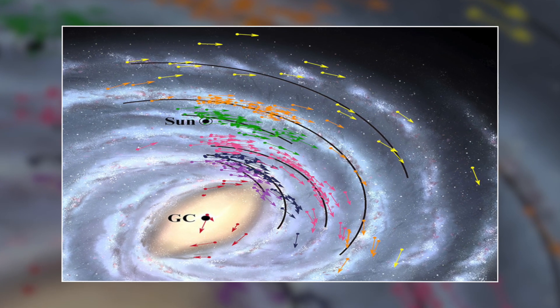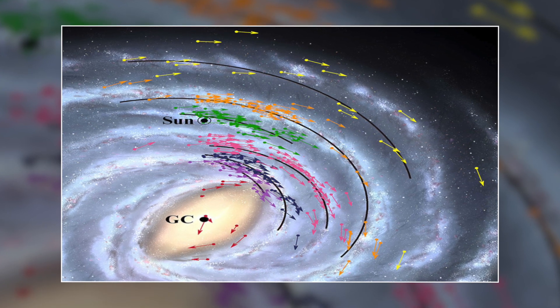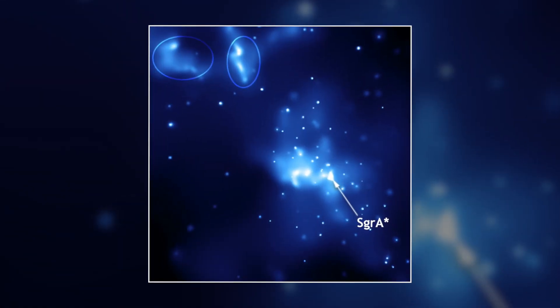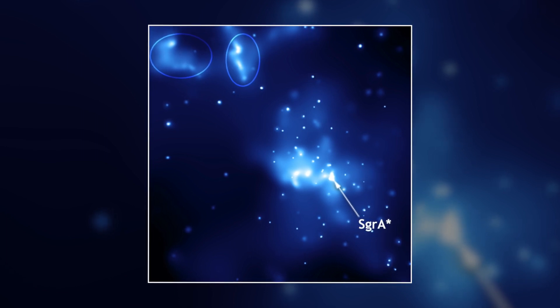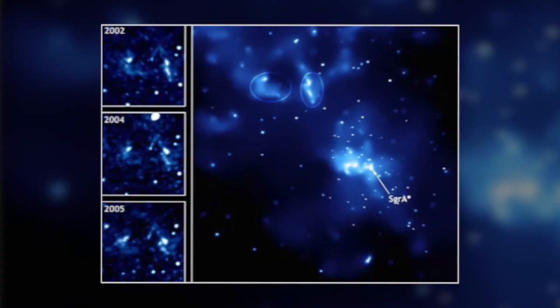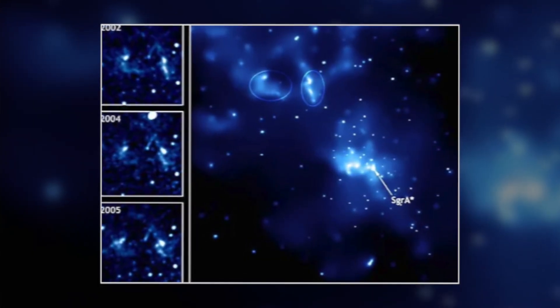Hours after the first image of the black hole at the center of the Milky Way was released, scientists from the Harvard and Smithsonian institutions discussed its significance in an online panel. So, what was explored in it, and what significance do the pictures hold?